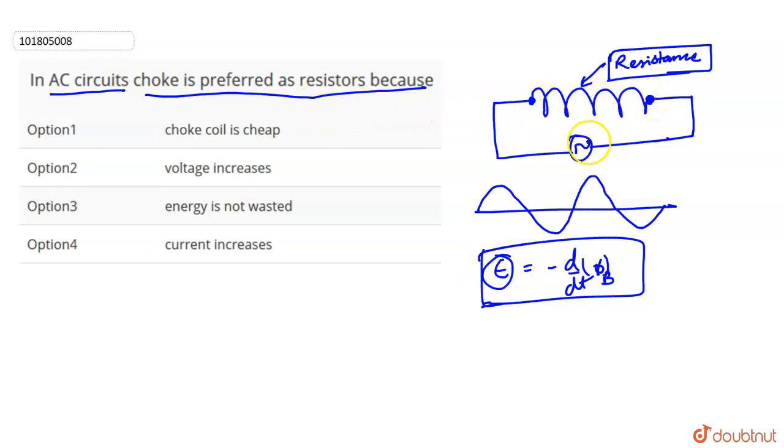This will be preferred in AC circuits. Why is the choke used in AC circuits? Let's check the options. Choke coil is cheap - this can happen but it is not true. Voltage increases - not true, voltage does not increase. Energy is not wasted - energy is not wasted, this is correct. And current increases - because induced EMF is generated.